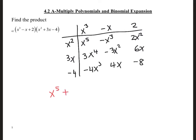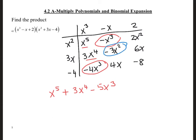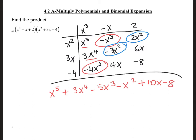The highest exponent I have is x to the power of 5. Then the next one is x to the power of 4, so that's 3x to the power of 4. Then for x cubed, I have this one and that one, so that's minus 5x cubed. For x squared I have these two, so they cancel. Then I have 10x minus 8. That is my answer.